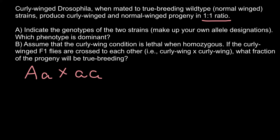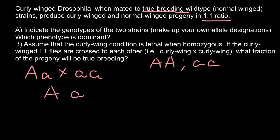We have a hint: we are told that we cross curly-winged Drosophila with true-breeding wild type. True breeding means the organism must be either homozygous dominant or homozygous recessive. So right away we know that wild type is the homozygous recessive genotype, and now we can easily solve this problem by crossing the heterozygous genotype with the homozygous recessive.